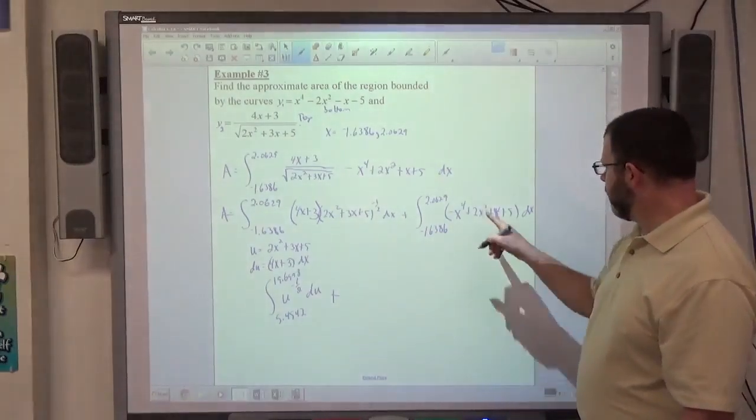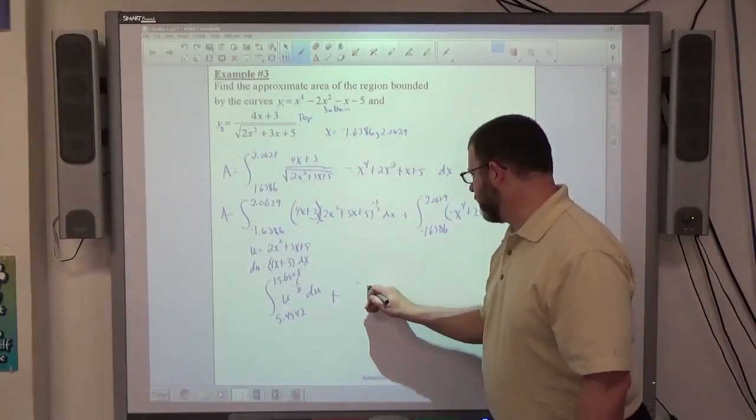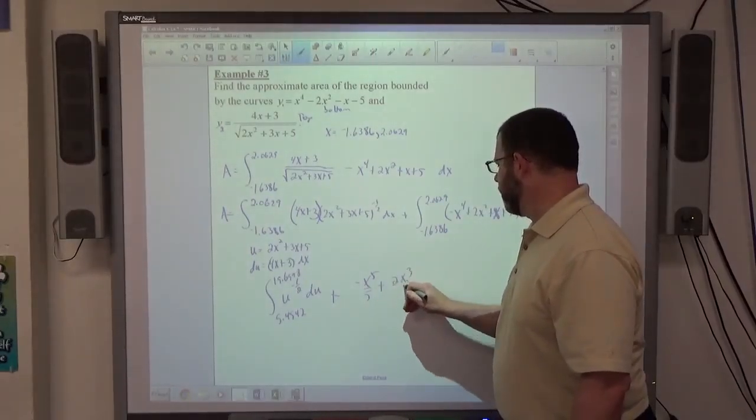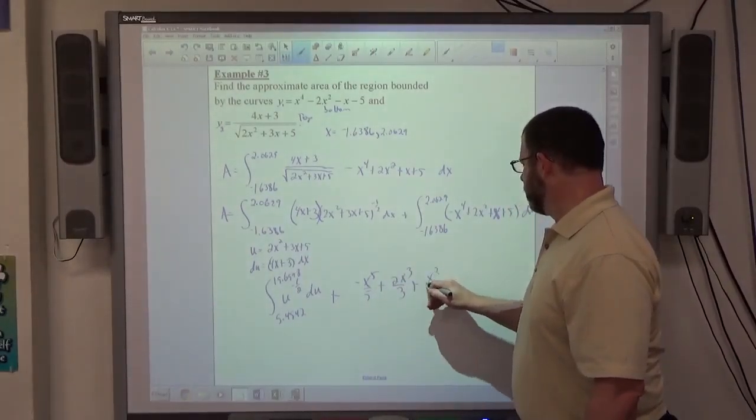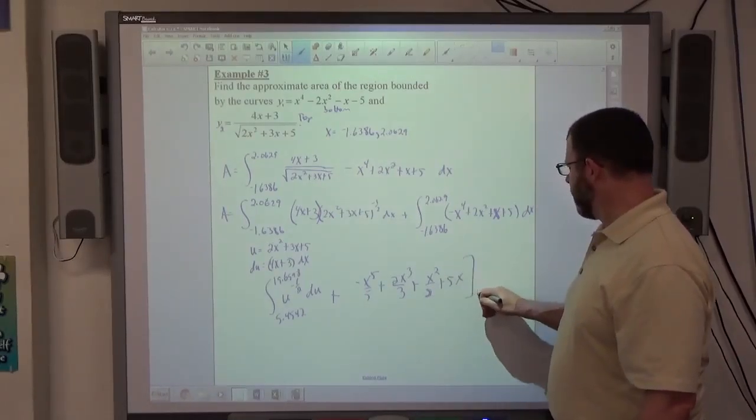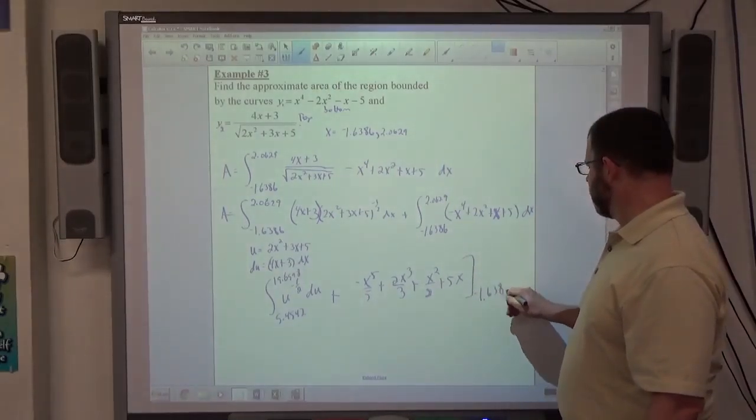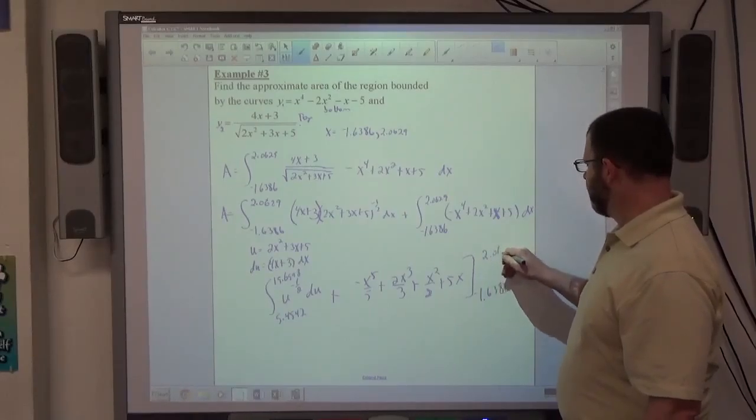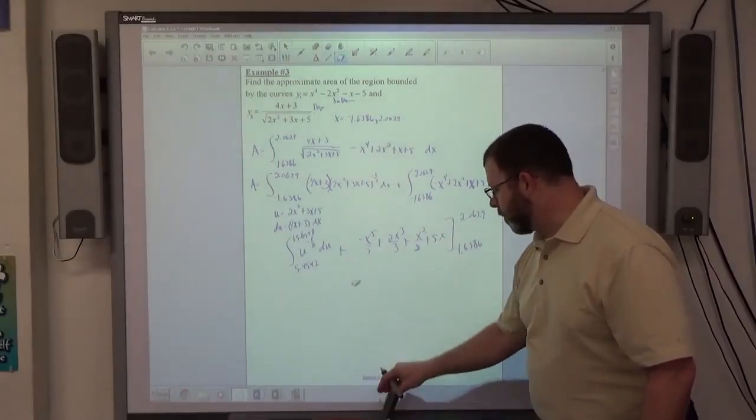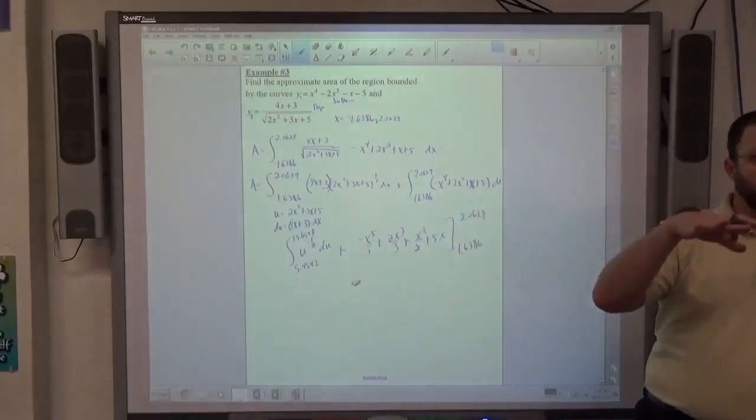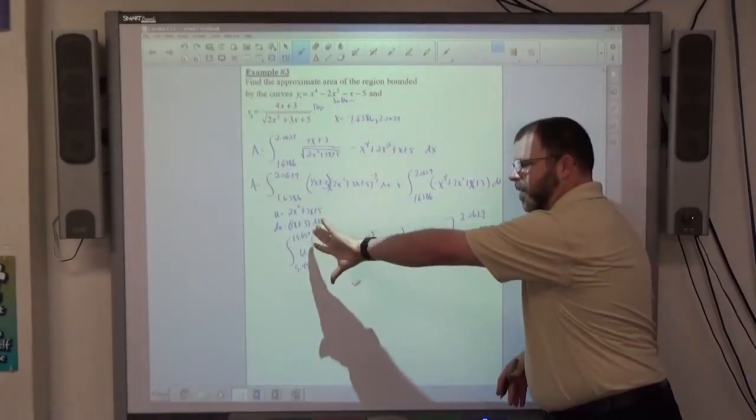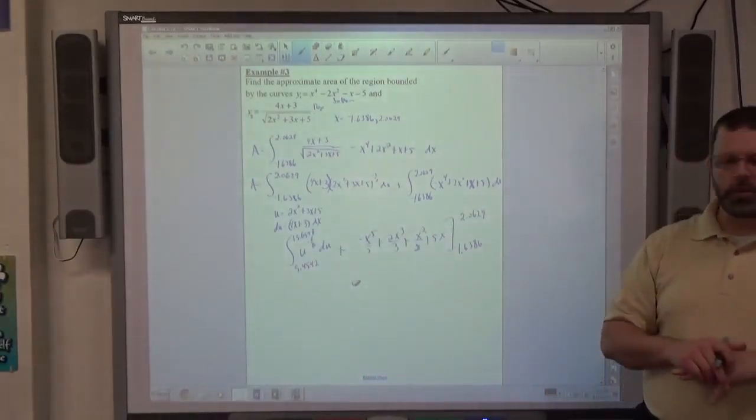So these were both x. So what I want to do is create u's out of them, right? So if I get my calculator, and I type in 2 times parentheses negative 1.6386 in parentheses squared plus 3 times negative 1.6386 plus 5, that comes out to 5.4542. And if I do 2 times 2.0629 squared plus 3 times 2.0629 plus 5, that comes out to 19.6998. So I've transformed this ugliness into a pretty basic integral, right? It's a power function from here to here. If you do have to break them apart like this and do some u substitution or some regular stuff, keep in mind these are still x's, these are still about x. That's now about u, so we have different intervals going on here.